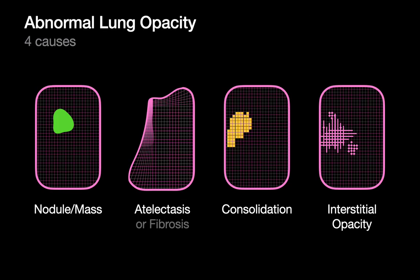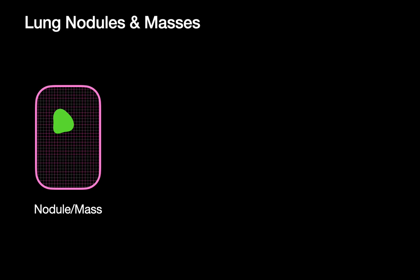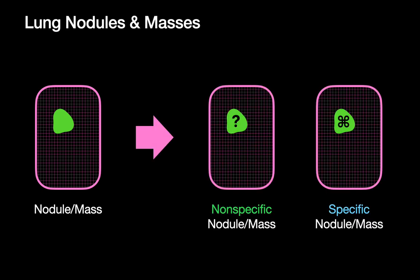In our last talk, we introduced the concept of how pretty much any abnormal opacity of lung can be explained by one of four reasons. Through the next couple of talks, we're going to discuss the interpretation, diagnosis, and management of each of these types of opacities. We're going to start with nodules and masses. When talking about their interpretation and management, we're going to break these down into two buckets: nonspecific ones and specific ones.